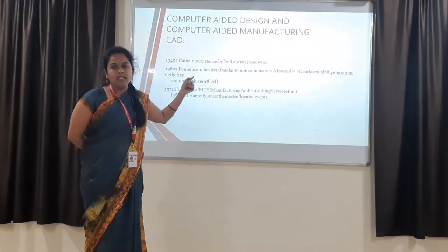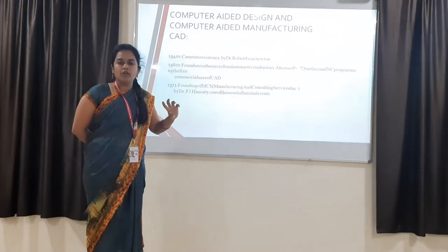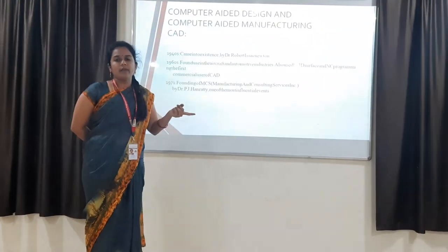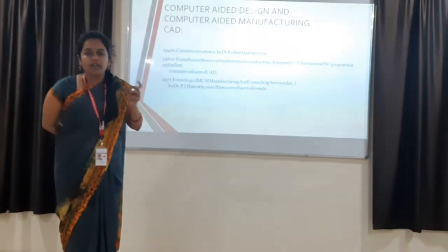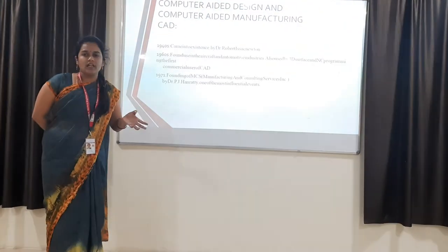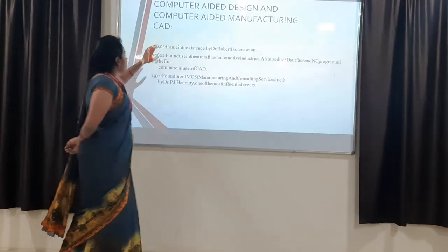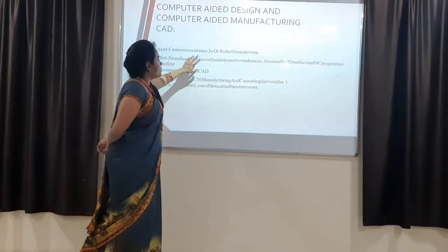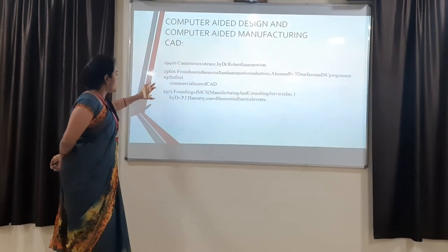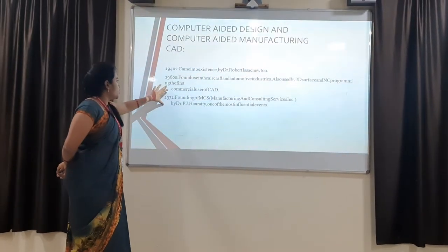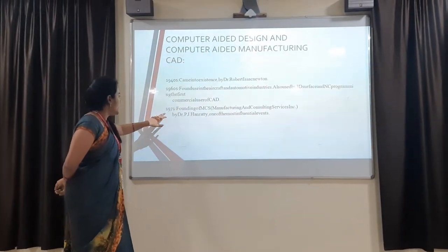In the 1960s, the CAD system was adopted in crafts and automobile industries. In automobiles, the outer layer — the draft of the chassis — along with mathematical calculations, and the outer cover of cars, everything is done with the help of CAD designing. By analyzing it before manufacturing, we are able to reduce scrap — the material is not lost. CAD is also used for 3D surface and NC numerical control programming.